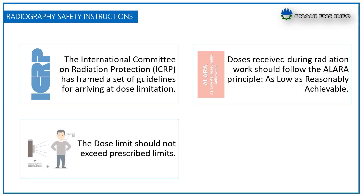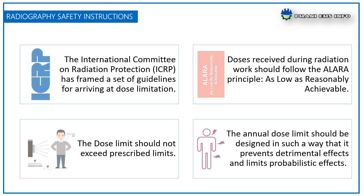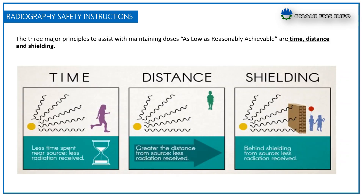The dose limit should not exceed prescribed limits. The annual dose limit should be designed in such a way that it prevents detrimental effects and limits possibilities of stochastic effects. The three major principles to assist with maintaining doses as low as reasonably achievable are time, distance, and shielding.